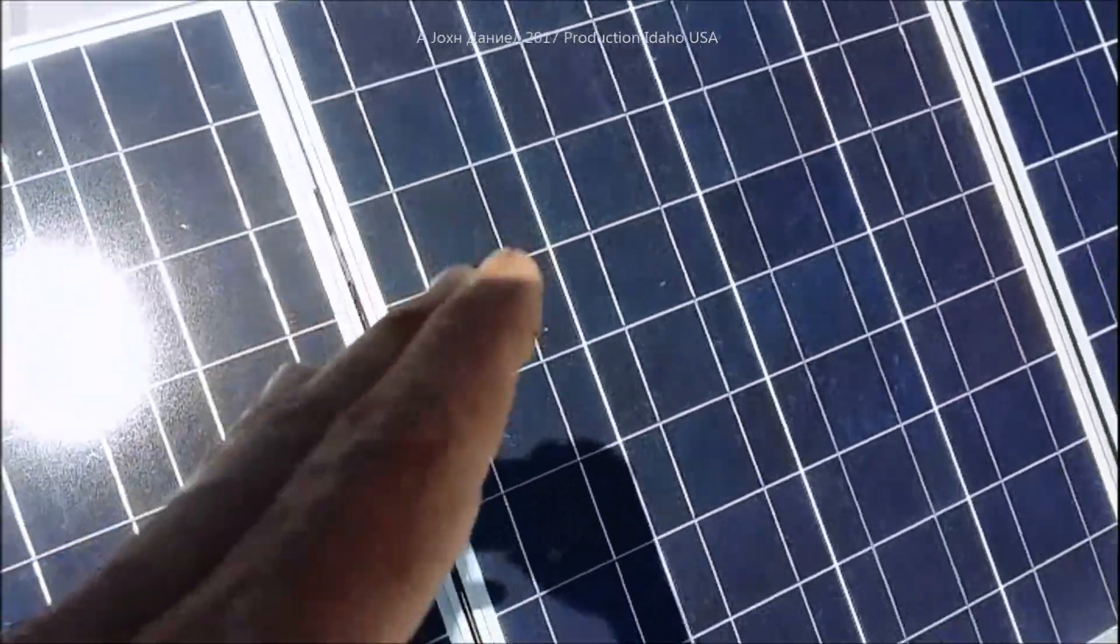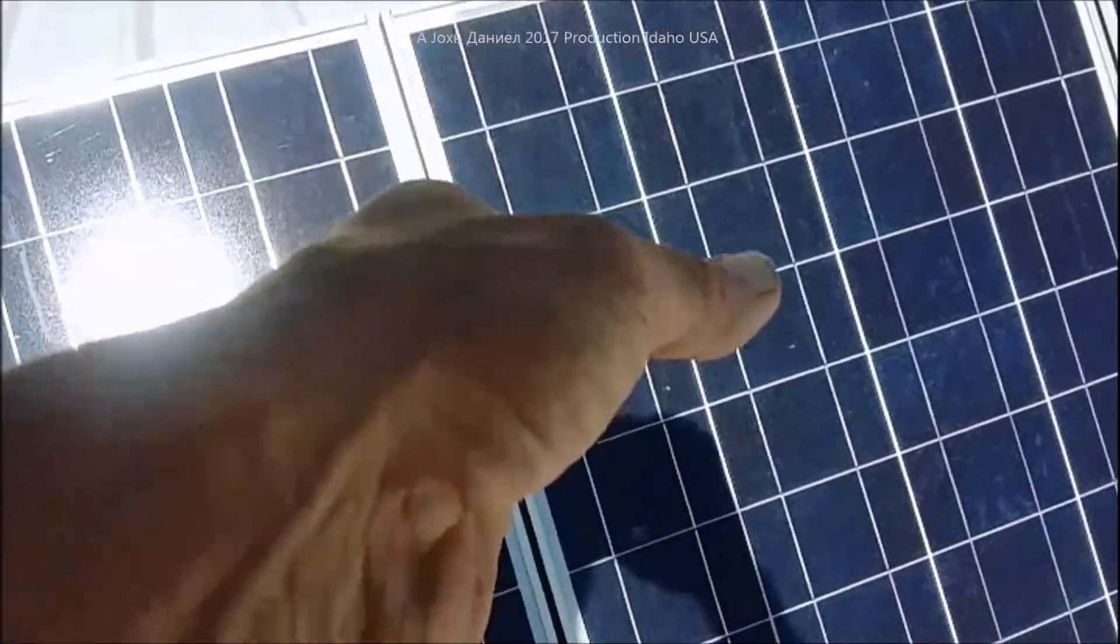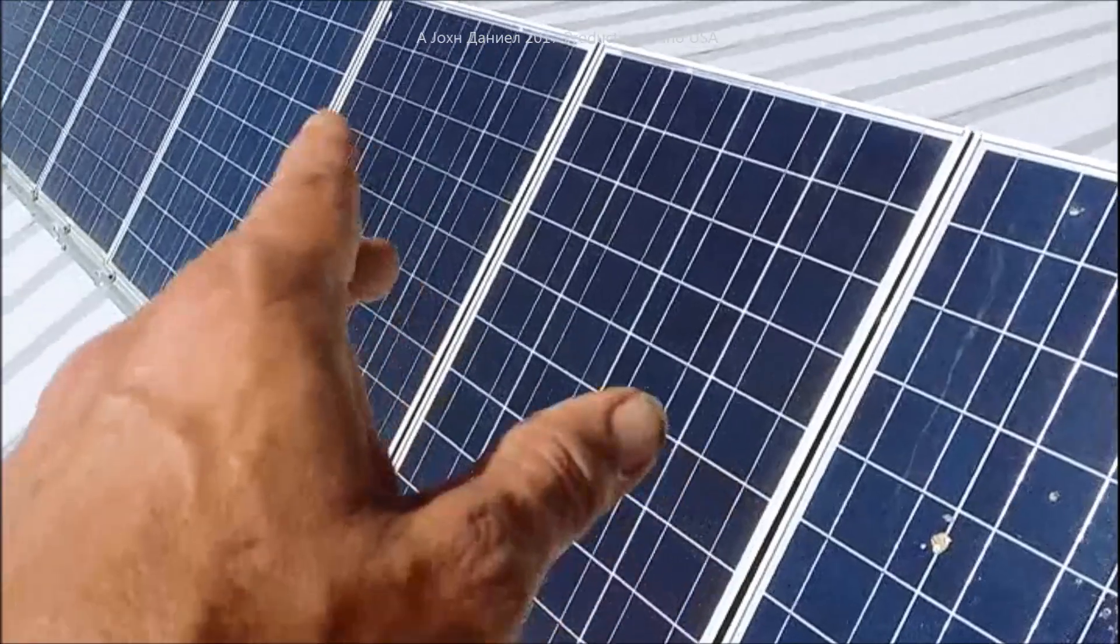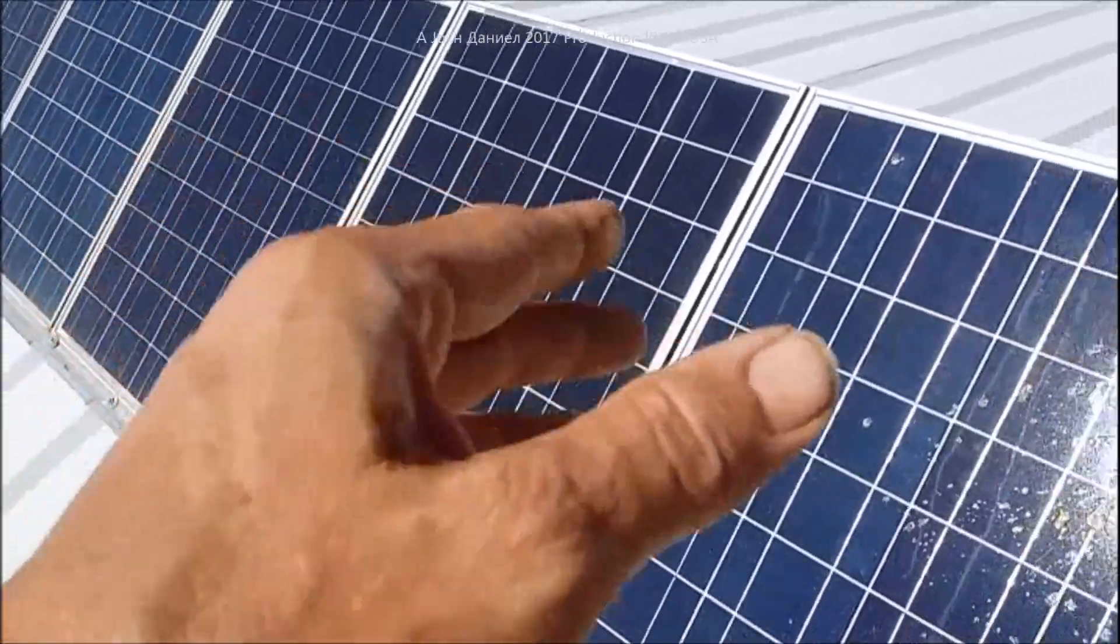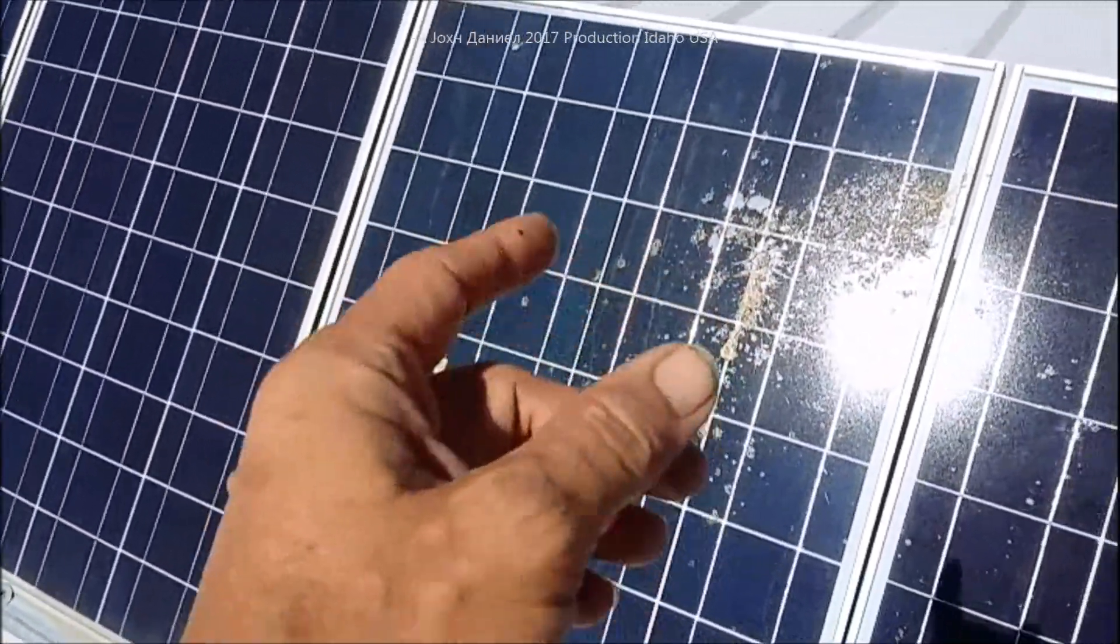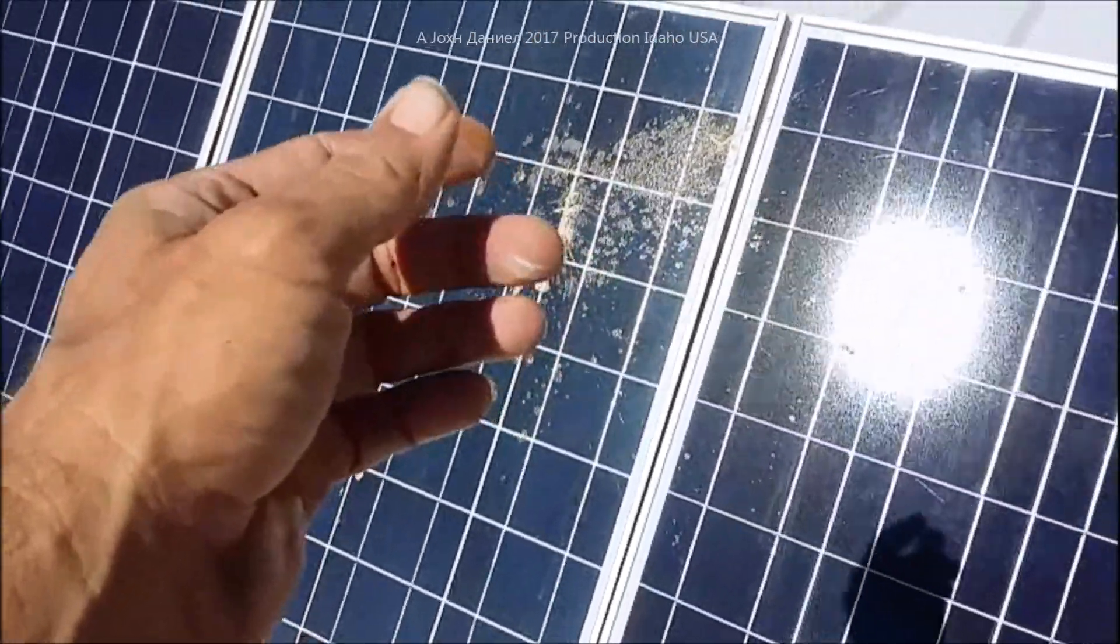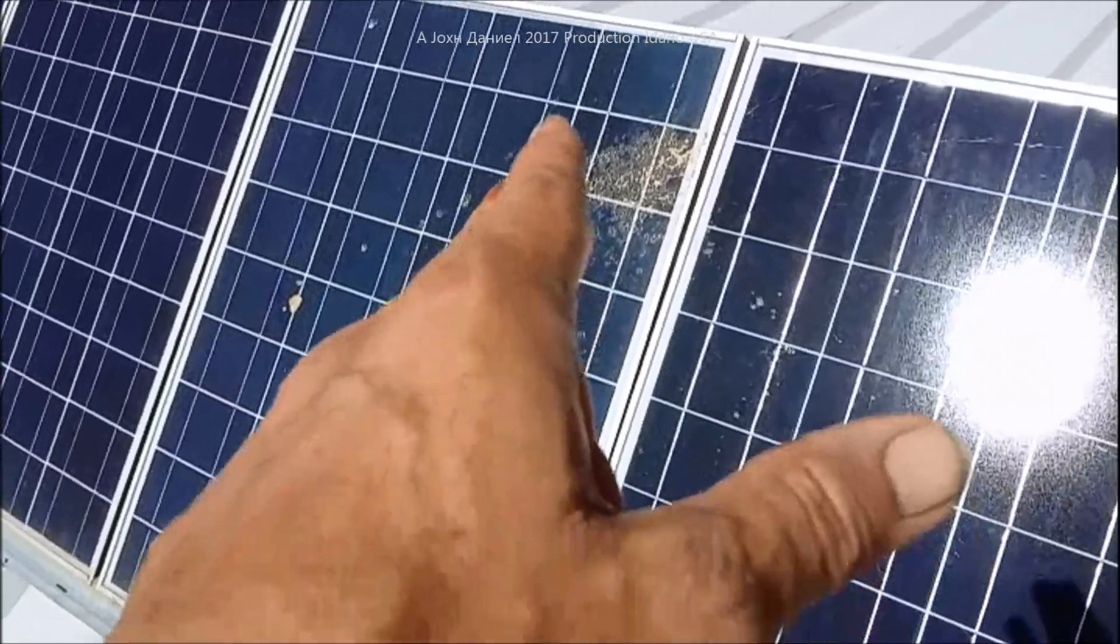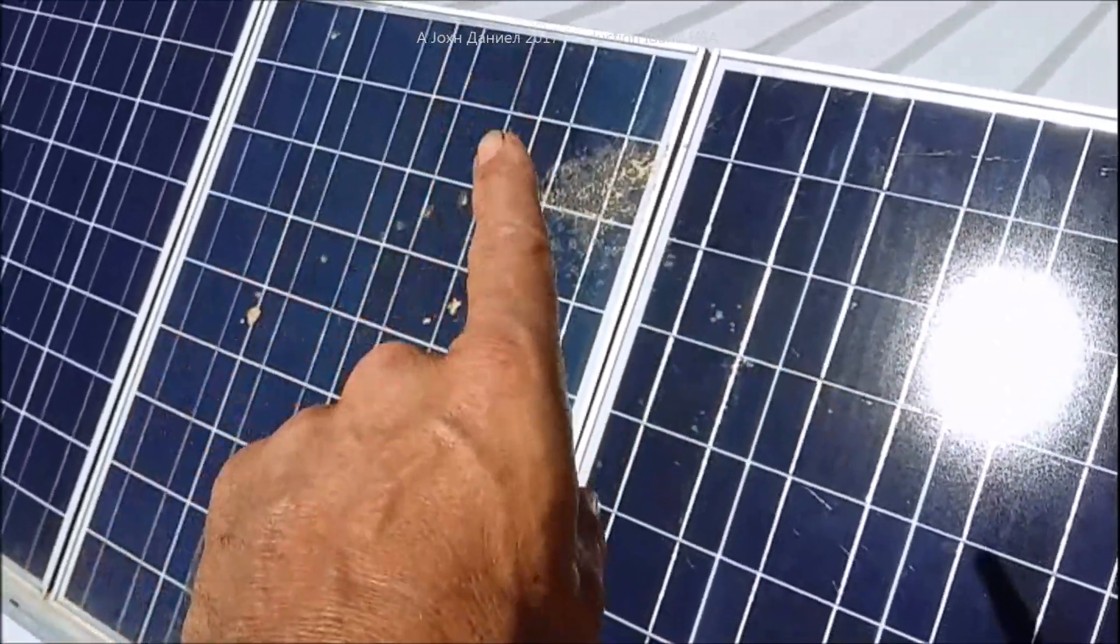The effect of this without a blocking diode means that this panel - I've got one, two, three, four panels that are wired and they go to a controller. And then over here I've got one, two, three, four, five, six that are wired and they go to a higher volume controller. In fact, they go to a Solar Eagle controller that's down in the shop.